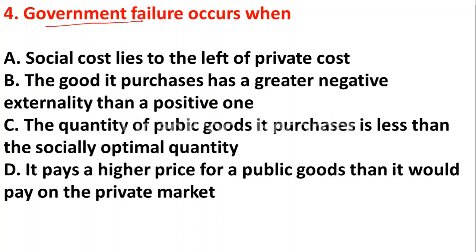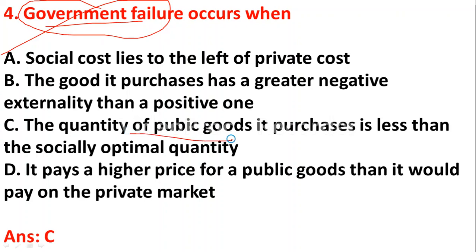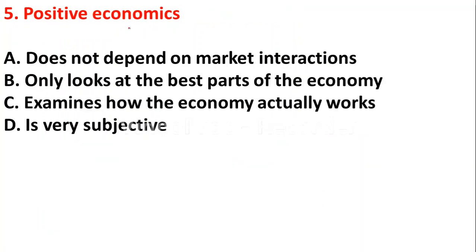Question 4: Government failure occurs when: option A - social cost lies to the left of private cost; option B - the good it purchases has greater negative externalities than positive ones; option C - the quantity of public goods it purchases is less than the socially optimal quantity; option D - it pays a higher price for public goods than on the private market. Government failure occurs when the quantity of public goods purchased is less than the socially optimal quantity — option C.